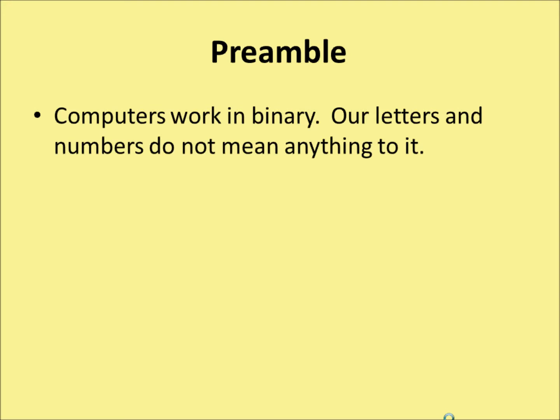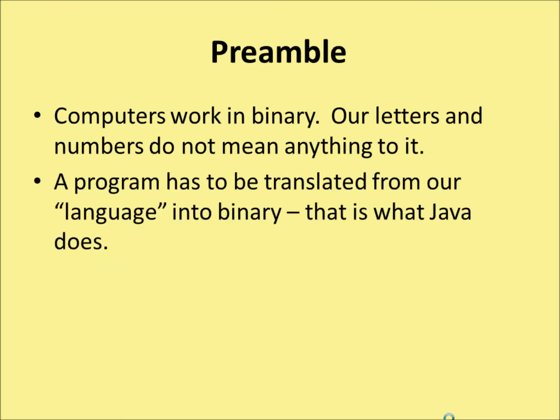First of all, all computers work in binary. Our letters and numbers don't mean anything to it. Everything has got to be converted into its own language — ones and offs. A program has to be translated from our language, Java, into binary. And that's what the Java compiler does — it takes things that you and I can read and turns them into the ones and offs that the computer itself can understand.